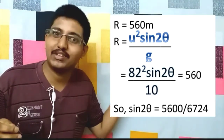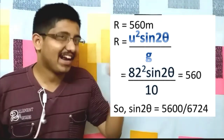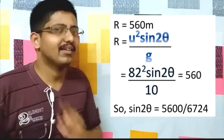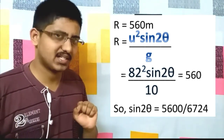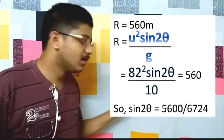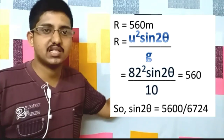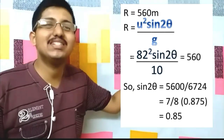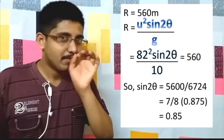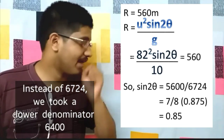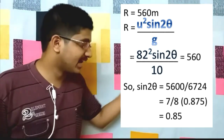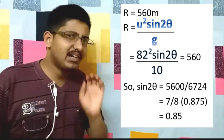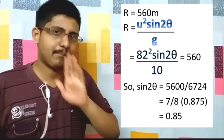Now, how to simplify 5600/6724 easily? There is a trick: convert the denominator to a number that allows easy division of 5600. We approximate the denominator to 6100, and dividing both by 8 we get sin 2θ ≈ 7/8 = 0.875. But note: we reduced the denominator, so the actual value is slightly less than 0.875 — something like 0.85. We must account for this approximation in the next step.